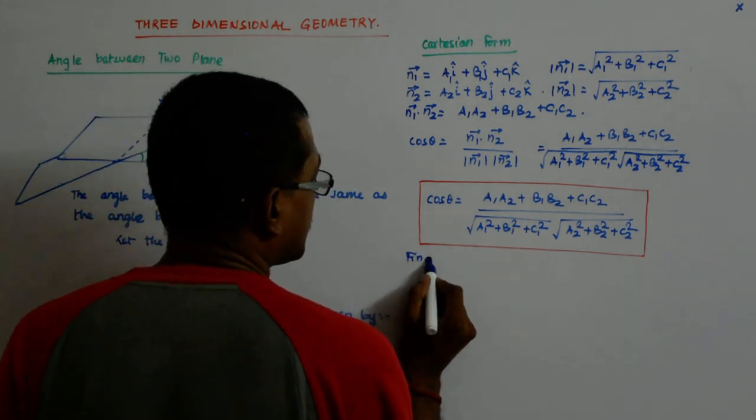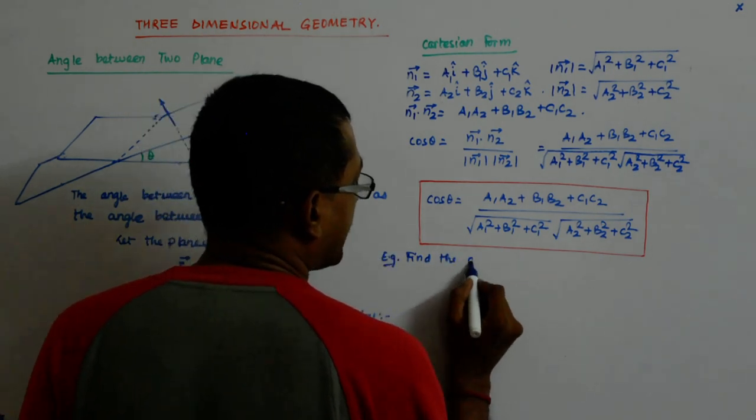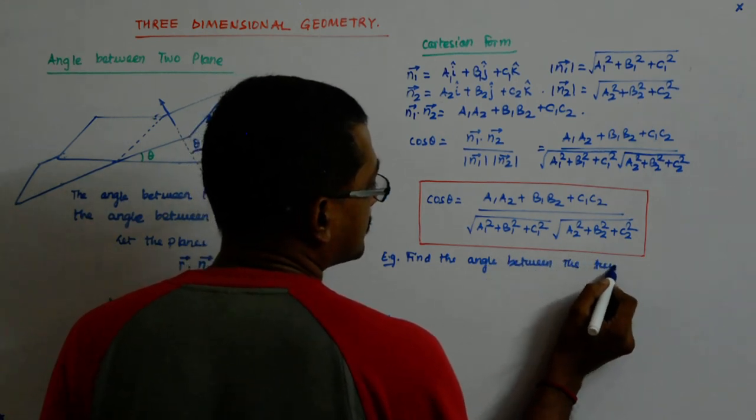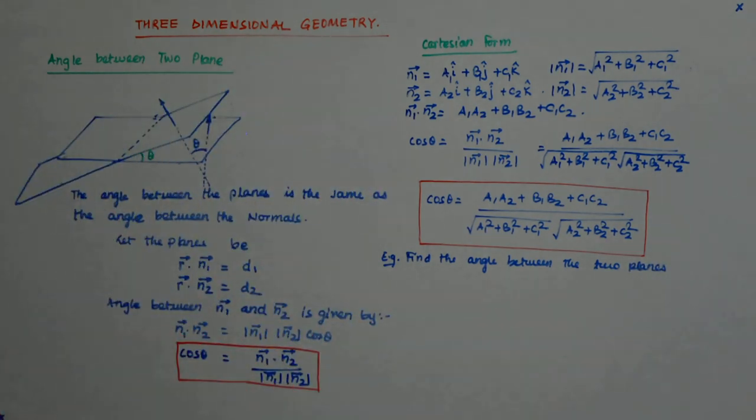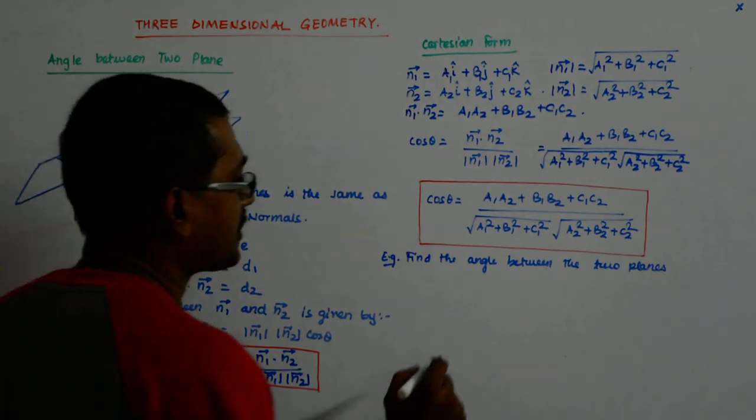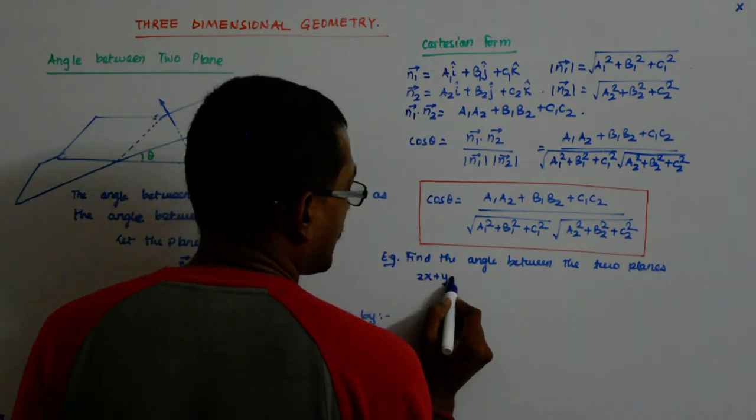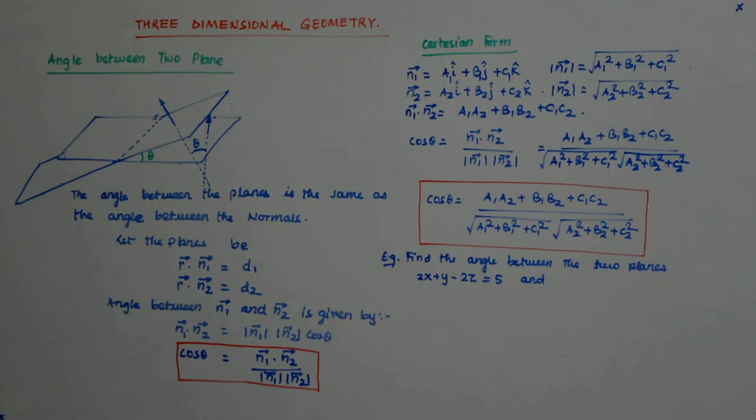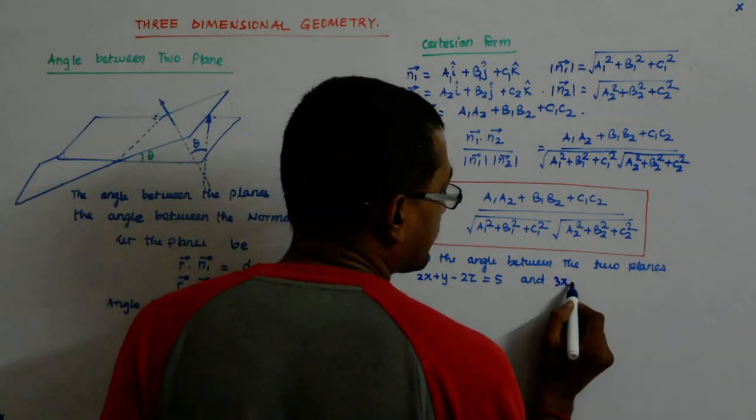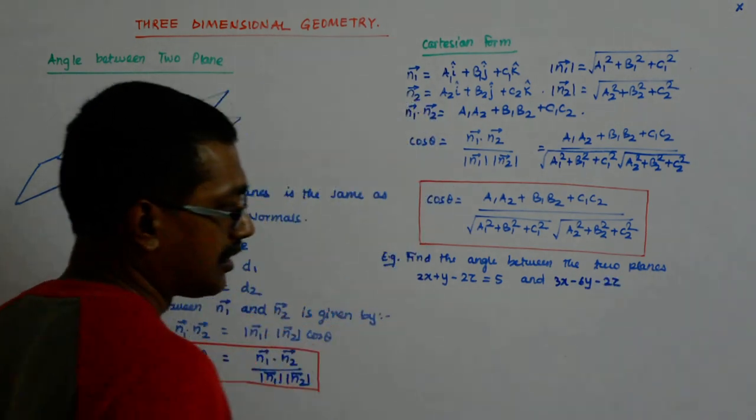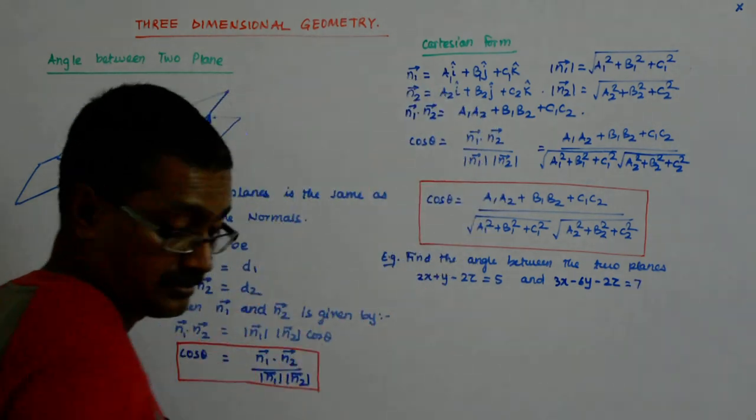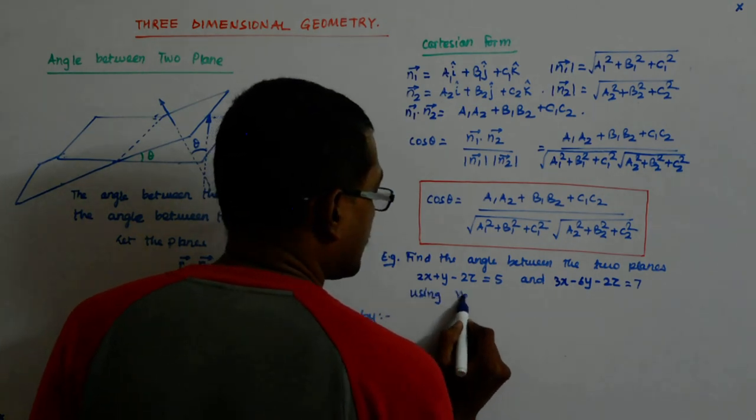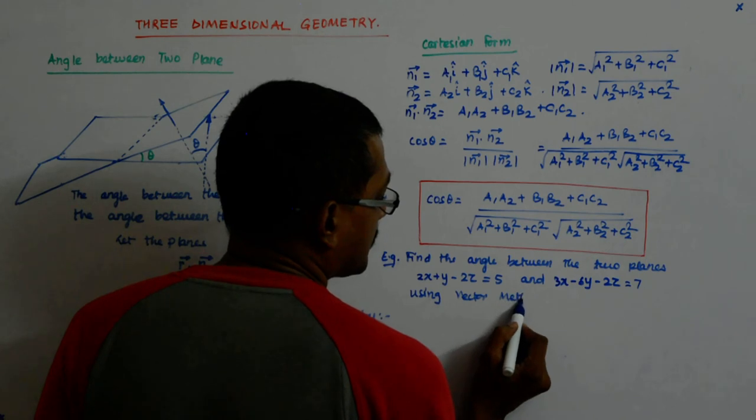Example: Find the angle between the two planes. 2x plus y minus 2z is equal to 5, and 3x minus 6y minus 2z is equal to 7, using vector method.